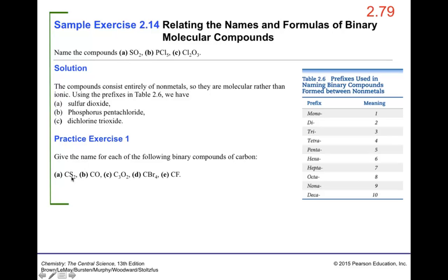Let's also try CS₂, which is carbon disulfide, and CO, which is carbon monoxide — note that mono is used here for the second element, oxygen, in carbon monoxide.